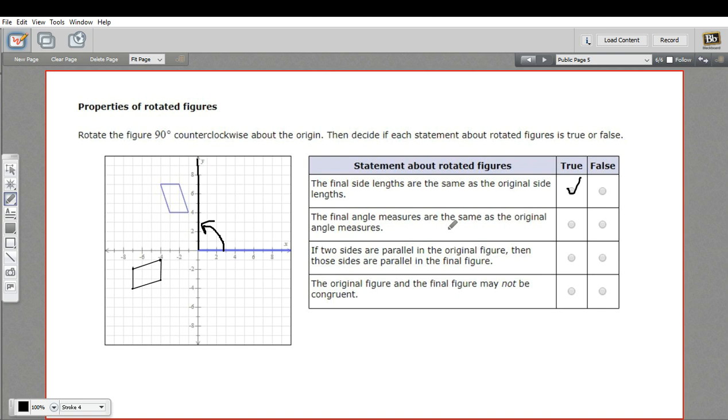The next one says the final angle measures are the same as the original angle measures. Yep, all of these sides meet each other in exactly the same angles that we had up here. It's the same shape. So the angles are going to be the same.